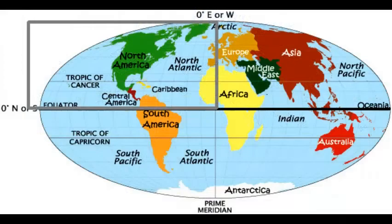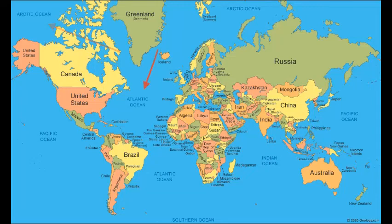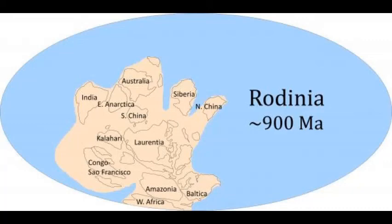North America is entirely within the Northern Hemisphere and almost all within the Western Hemisphere. It is bordered to the north by the Arctic Ocean, to the east by the Atlantic Ocean, to the southeast by South America and the Caribbean Sea, and to the west and south by the Pacific Ocean.